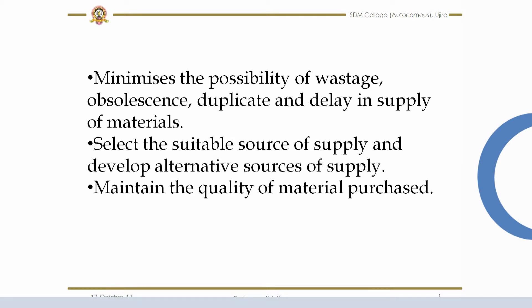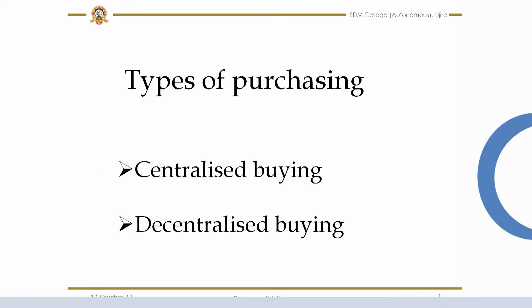The purchase department also selects suitable sources of supply, develops alternative sources of supply, and maintains the quality of material purchased. Next, we look at types of purchasing. Keeping in view various factors like types of materials required, types of product produced, and nature of the organization, purchasing has to be undertaken. By considering the advantages and disadvantages of centralized and decentralized buying, the organization chooses the best option according to its requirements. There are two types: centralized buying and decentralized buying.